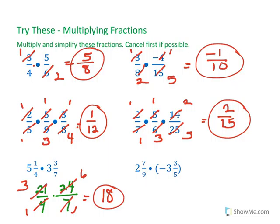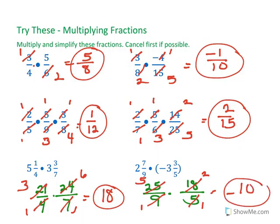Let's turn these into improper fractions. 2 times 9 is 18, and 7 is 25 ninths. Don't forget that negative here. And we have 18 over 5. And now, 5 goes into 25 five times, and 9 goes into 18 two times, and it is negative, so my answer is negative 10. How did you do?